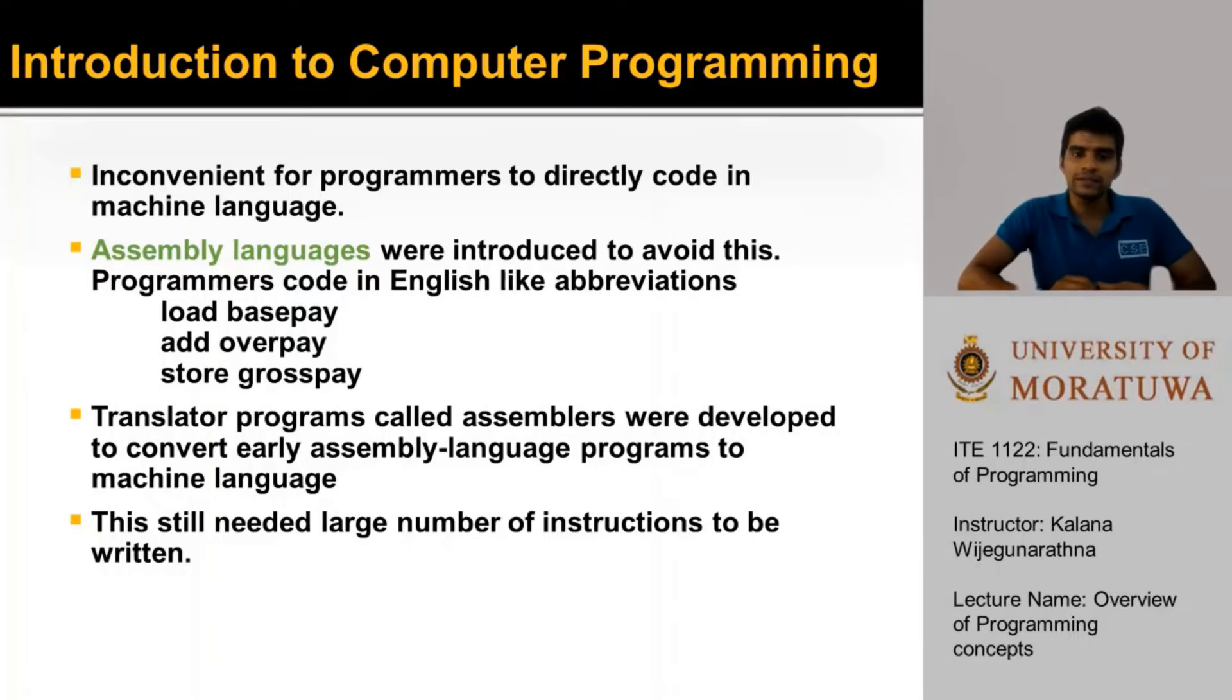Translator programs called assemblers were developed to convert early assembly language programs to machine language, because, as you remember, I said machines or computers only understand machine language. But these more English-like and human-like instructions had to be converted to machine language. And this was done using translators or assemblers. But still, they still needed a large number of instructions to be written, and this was not very convenient to write long pieces of code.